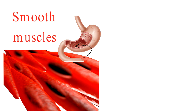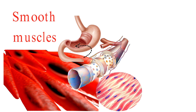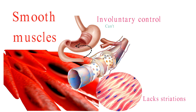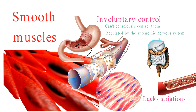Now, let's move on to smooth muscle tissue. It lines the walls of various internal organs, like the digestive tract and blood vessels. Unlike skeletal muscle, smooth muscle lacks striations and looks smooth under the microscope. Smooth muscles are involuntary, which means we can't consciously control them. Instead, they're regulated by the autonomic nervous system. Smooth muscles are the unsung heroes of our bodies, facilitating processes like digestion and regulating blood flow.